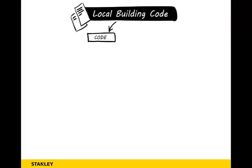It all starts with the local building code. They reference the codes that they want to follow in their jurisdiction. When they reference a standard, then the standard becomes a code.